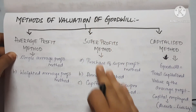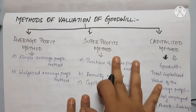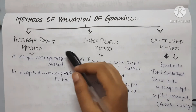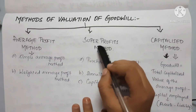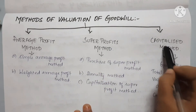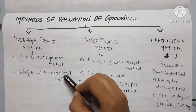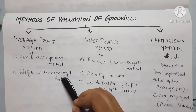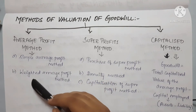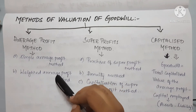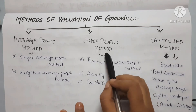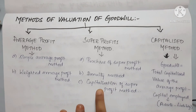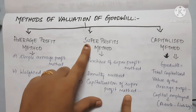There are three methods of valuation of goodwill. The first method is the Average Profit Method, which has two sub-methods: Simple Average Profit Method and Weighted Average Profit Method. The second is the Super Profit Method, which has three sub-methods: Purchase of Super Profit Method, Annuity Method, and Capitalization of Super Profit Method. The third is the Capitalized Method.